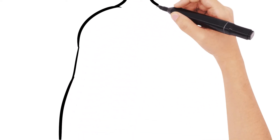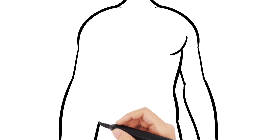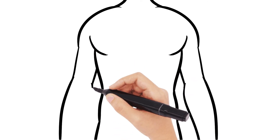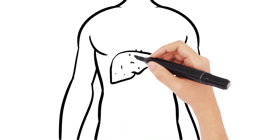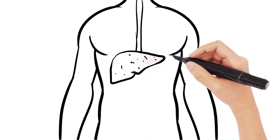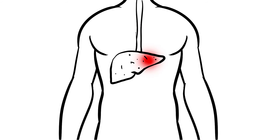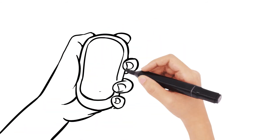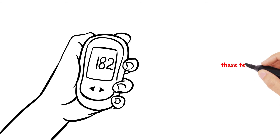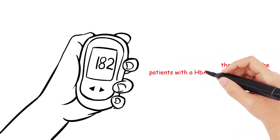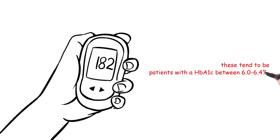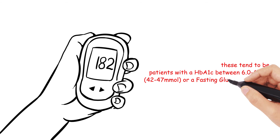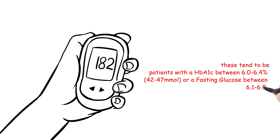Both impaired fasting glucose, where there is hepatic insulin resistance, and impaired glucose tolerance, where there is muscular insulin resistance, come under the umbrella of prediabetes. These tend to be patients with an HbA1c between 6.0% and 6.4%, or a fasting glucose of 6.1 to 6.9.